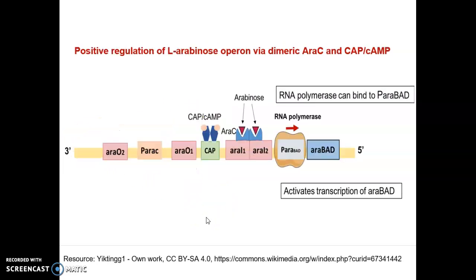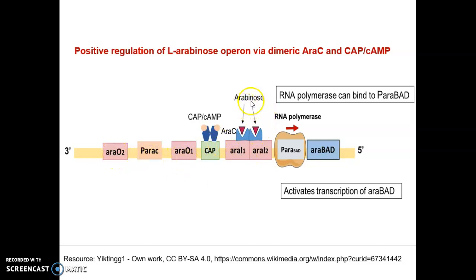Induction occurs when the cell doesn't have enough glucose and arabinose is available in the medium. Arabinose gets internalized and binds to the araC protein. The araC dimer in association with arabinose acts as an activator and binds to the initiator regions. Without arabinose, araC acts as a repressor binding to araI1 and araO2, but once arabinose is available it acts as a signal and changes the function of the araC dimer from repressor to activator.